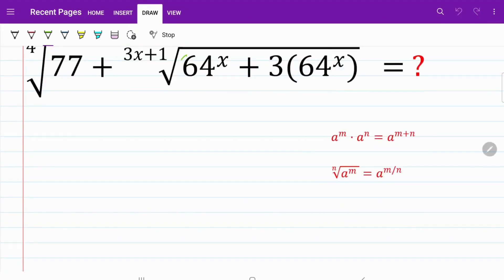Again, let's focus on the expression within the green bracket. I will copy it down here. So 64x plus 3 multiplied by 64x. That can be expressed as 4 cubed to the power of x plus 3 multiplied by 4 cubed to the power of x.